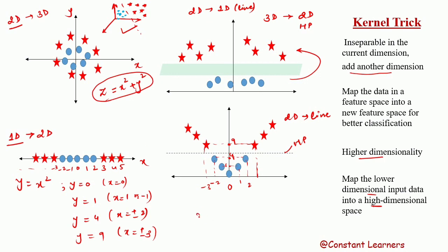When data is in three dimensions, we transform it into four-dimensional space; if in four dimensions, into five-dimensional space. This is possible, but SVM also has its limitations — it is robust to outliers but cannot accept too many. If the data is very large, transforming it into excessively higher dimensions becomes very complicated. There are multiple types of kernel functions: polynomial kernel, Gaussian kernel, and RBF kernel, though we are not going to discuss those in detail here.